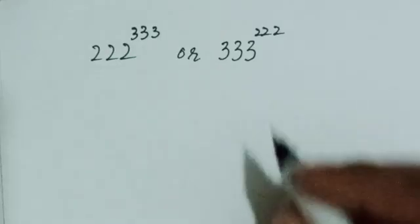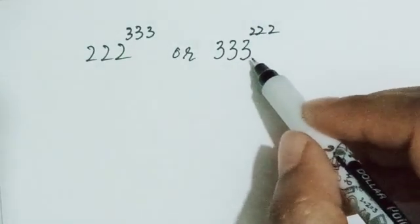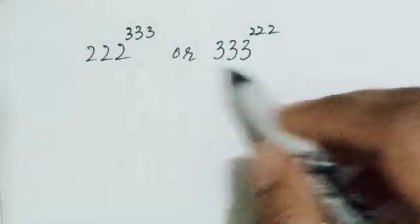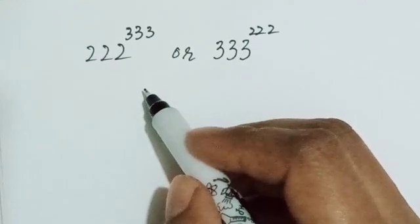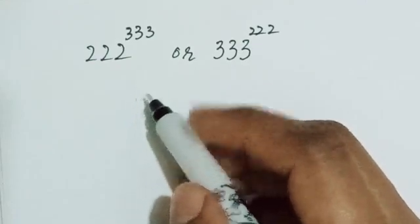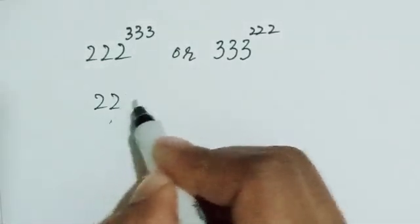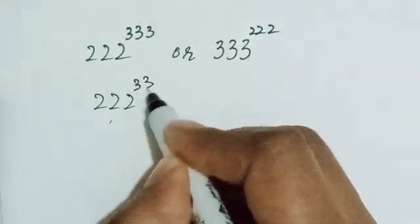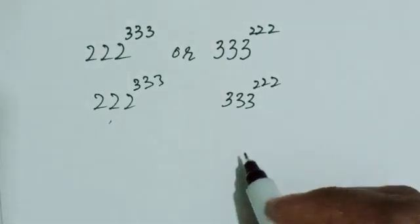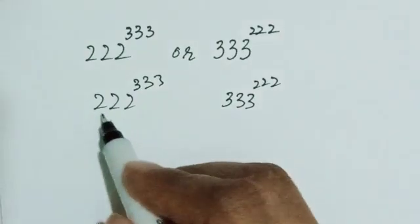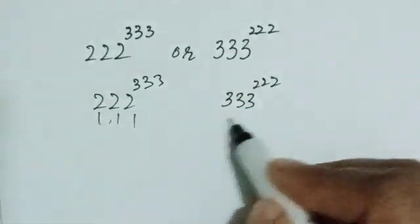Hi everyone, here I have a very nice and tricky exponents problem: to prove which is larger between two exponents. Calculators are not allowed, so I have to prove it manually. The two numbers are 222 to the power 333 and 333 to the power 222. I know that these are three-digit numbers composed of the digits 1, 2, and 3.